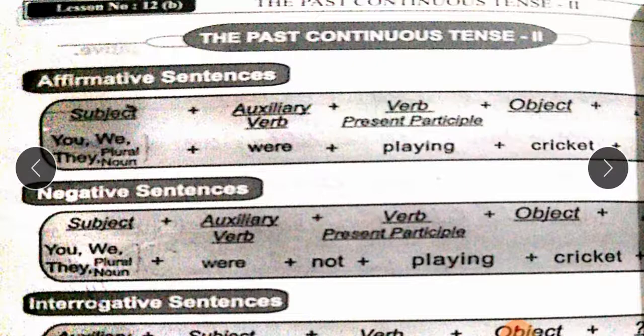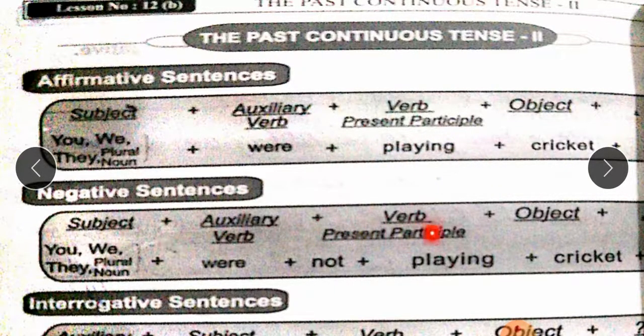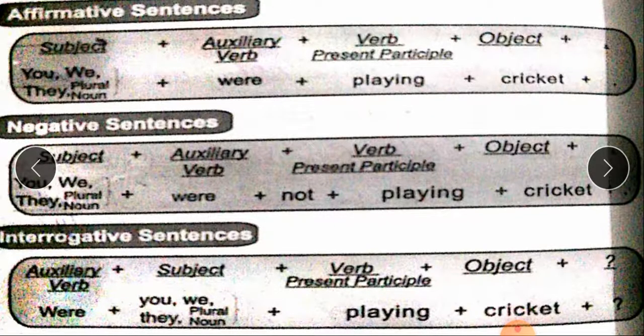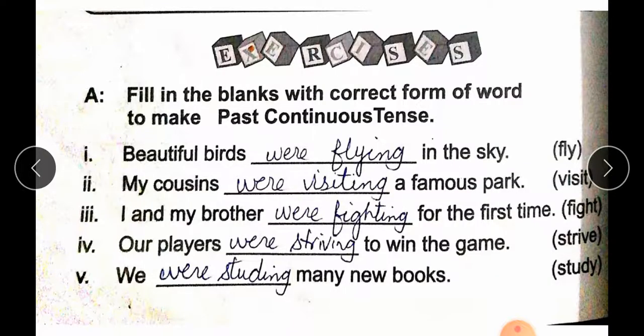Past Continuous Tense Part B — the next topic in this lesson. Affirmative sentence structure: For subjects you, we, they, and plural nouns, we will use auxiliary 'were' plus present participle plus object plus full stop. For negative, we will write 'not' after the auxiliary 'were'. Interrogative sentence: The auxiliary word 'were' will come at the beginning of the sentence and at the end put a question mark.